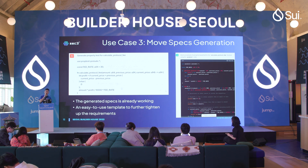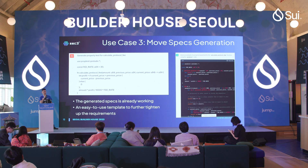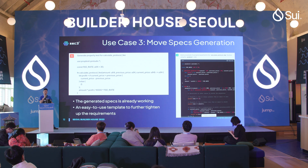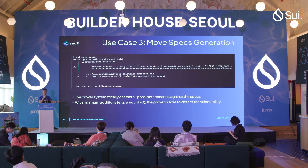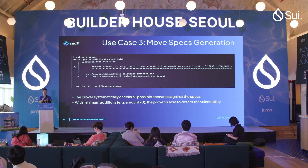Let's see how ChatGPT performs in terms of move specs generation. Even though the move specification language is relatively new, ChatGPT already does a pretty good job. We simply feed the program and ask it to generate the move spec. The out-of-the-box result has several assertions and is already working. This can also serve as a template if developers want to add more requirements or constraints. We made some minor changes to the specs generated by ChatGPT, and additionally included the requirement that the amount must be larger than zero. After that, we invoke the prover, and the prover converts the specs into mathematical constraints and systematically checks if the requirements are true for all possible scenarios. In this way, we're actually able to discover the rounding issue.